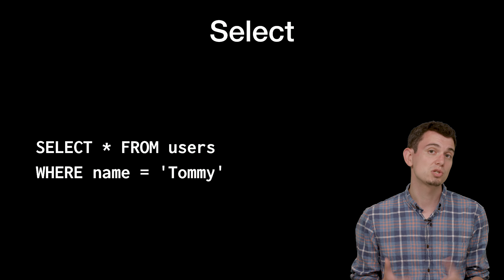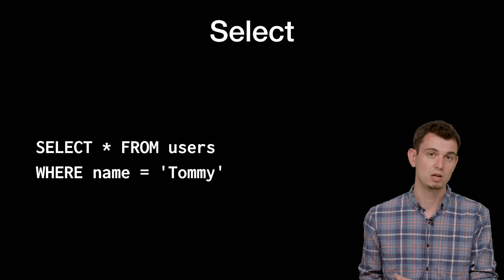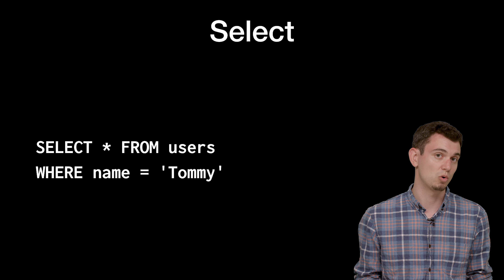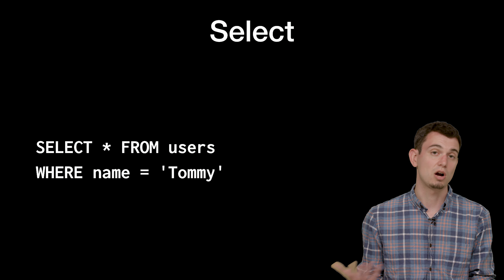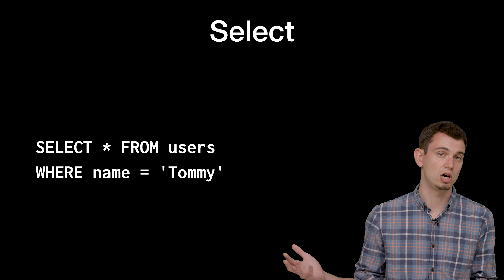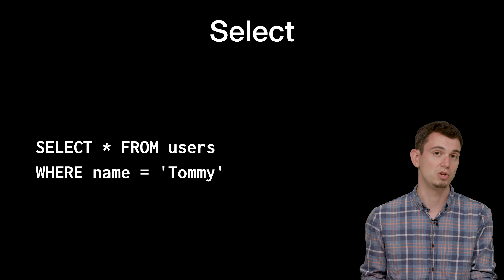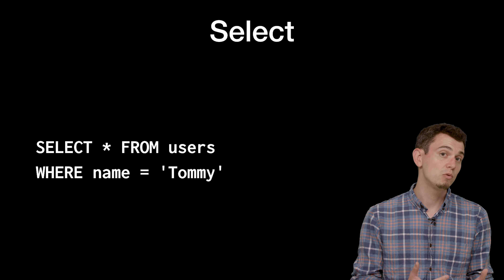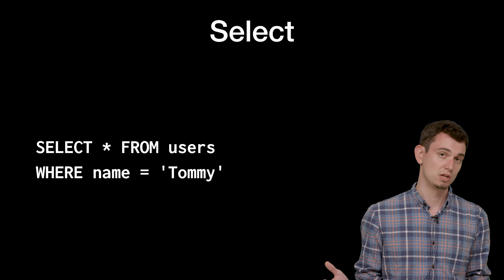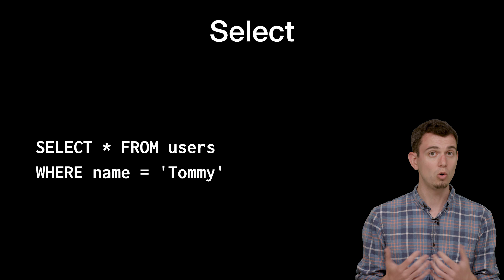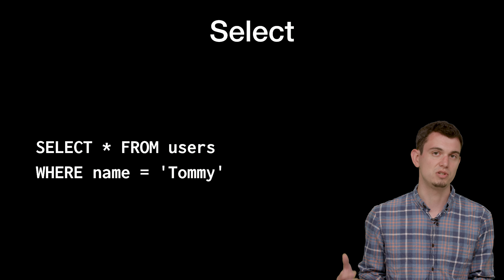After we insert data into the table, we probably want to read that data back somehow. This is what a SELECT query looks like. We start by saying SELECT. The star says give me all of the columns you have. We say FROM users, which is the table we want to read from. Then we have a WHERE clause that filters down those rows — so this says only give me the rows where the name column is equal to the text Tommy.